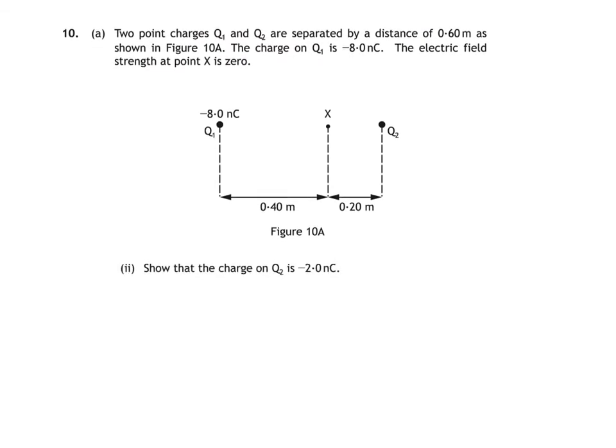We're now asked to show that the charge on Q2 is negative 2.0 nanocoulombs. Remember that the electric field strength at X is 0, so it must be that the electric field strength due to charge 1, E1, is equal in magnitude but opposite in direction to the electric field strength due to charge 2. Since electric field strength is a vector quantity, E1 and E2 add to 0 at point X.